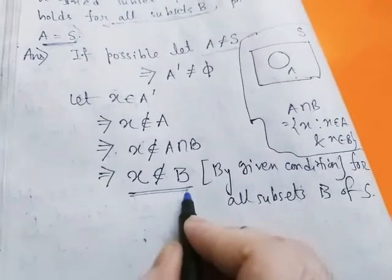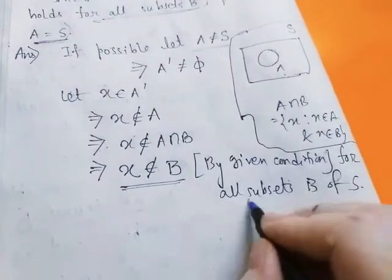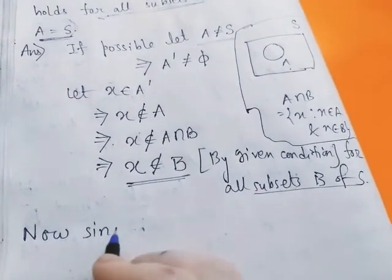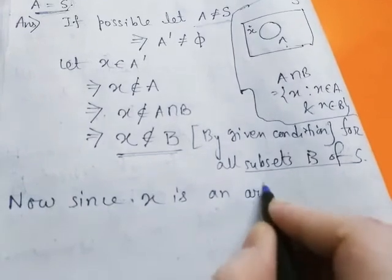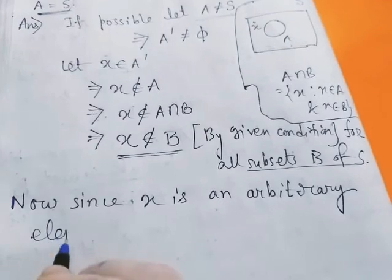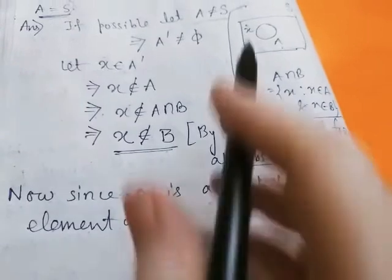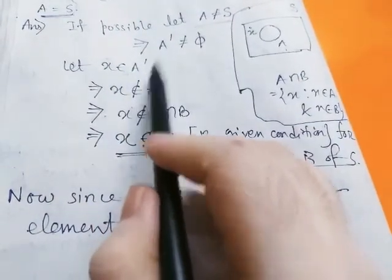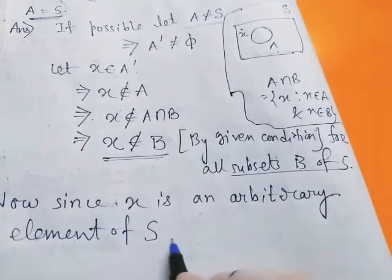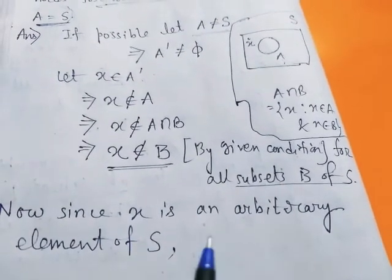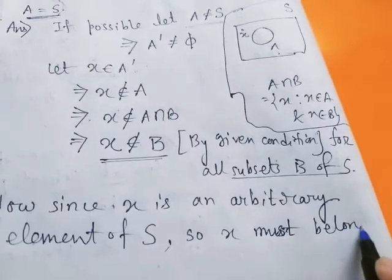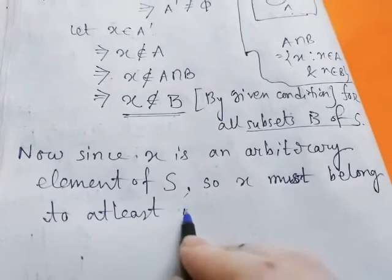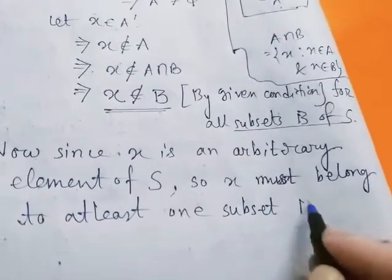We get x does not belong to B for all subsets B of S. Now since x belongs to A complement, and A complement is a subset of S, x is an arbitrary element of S. Therefore x must belong to at least one subset B of S.